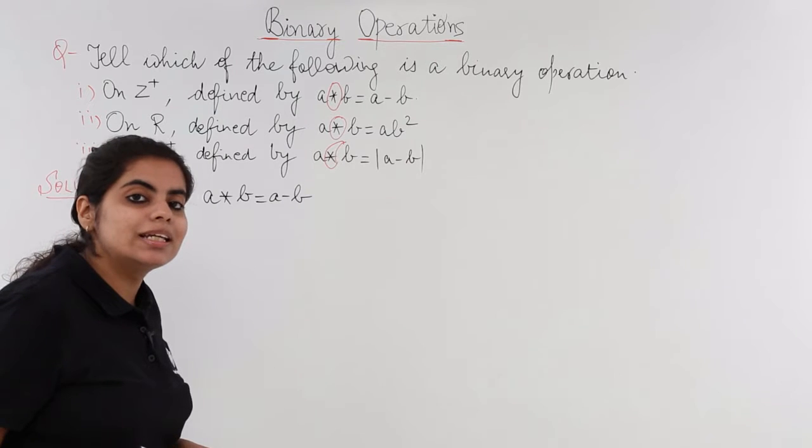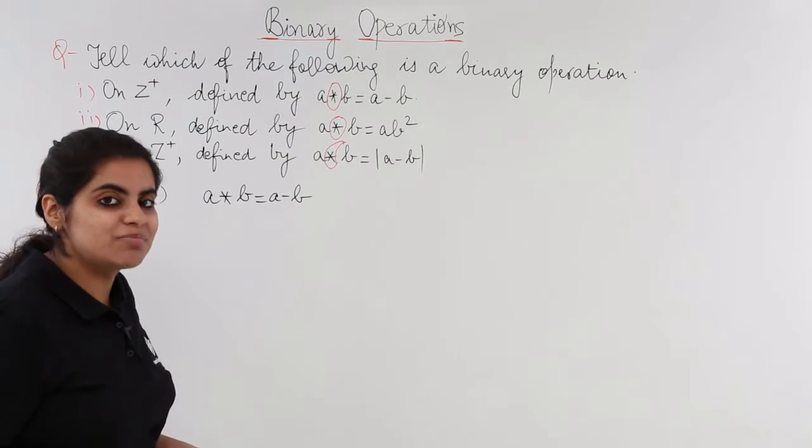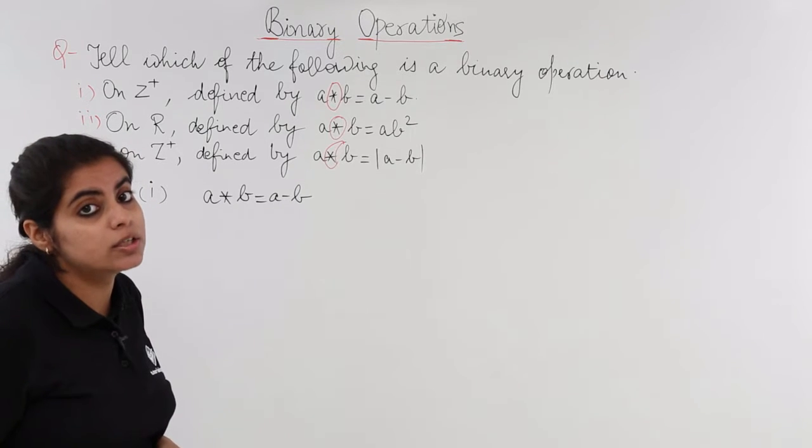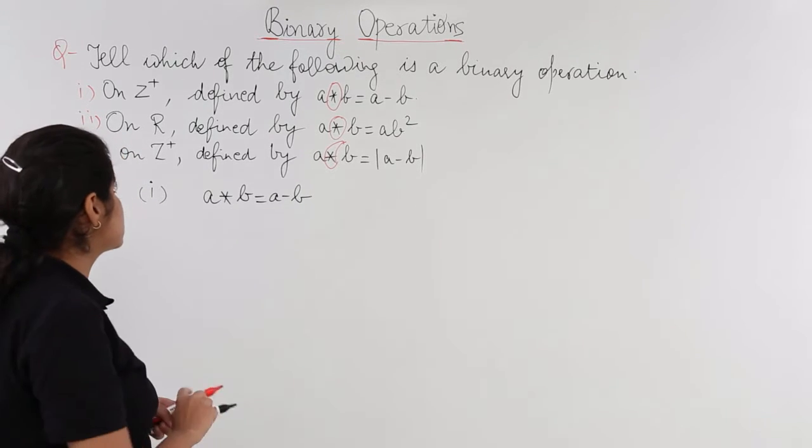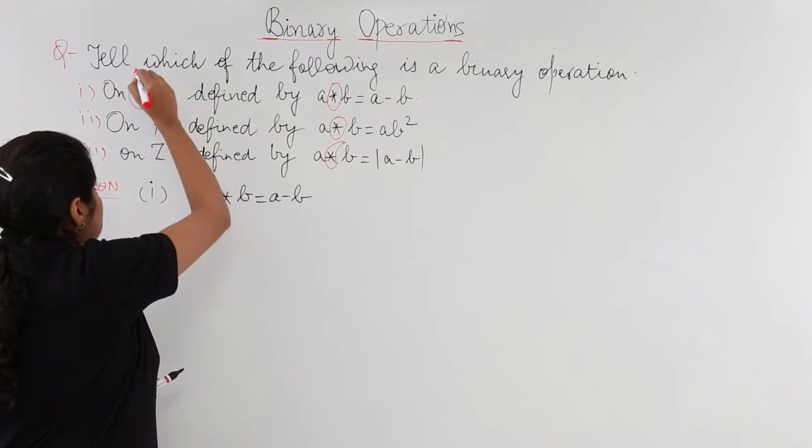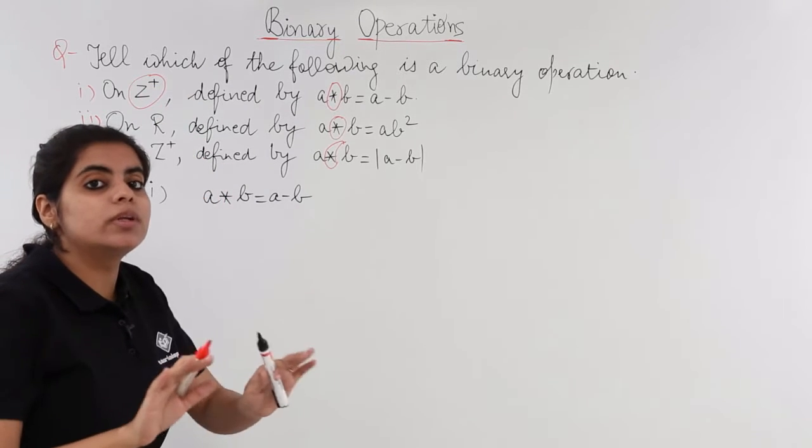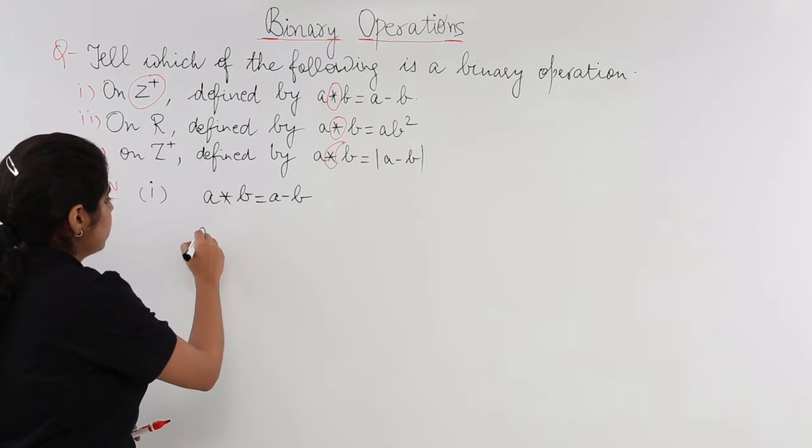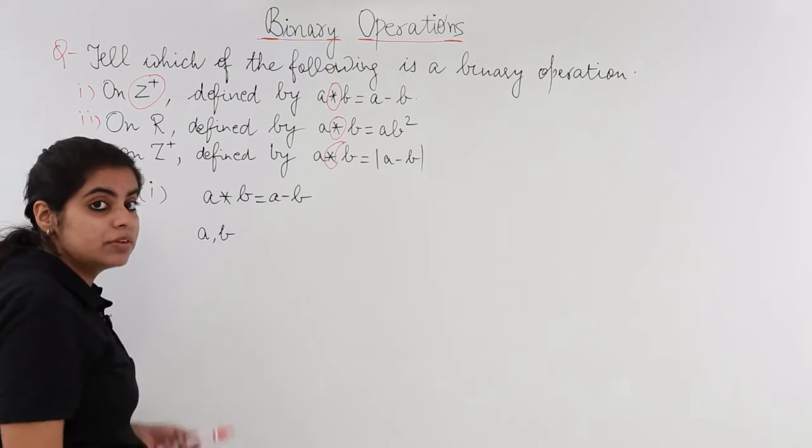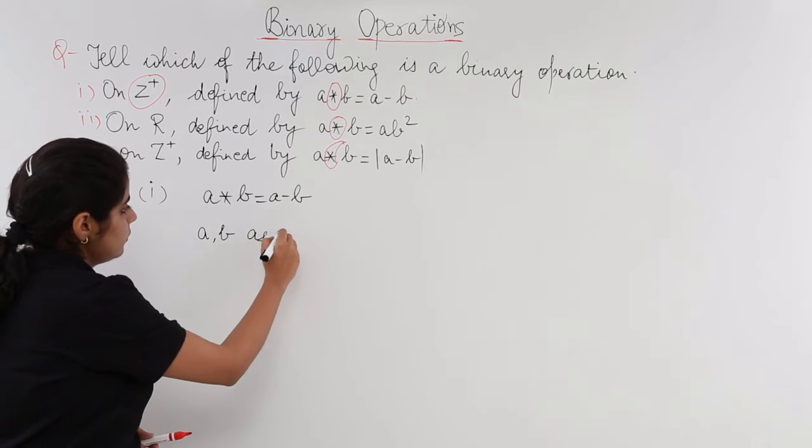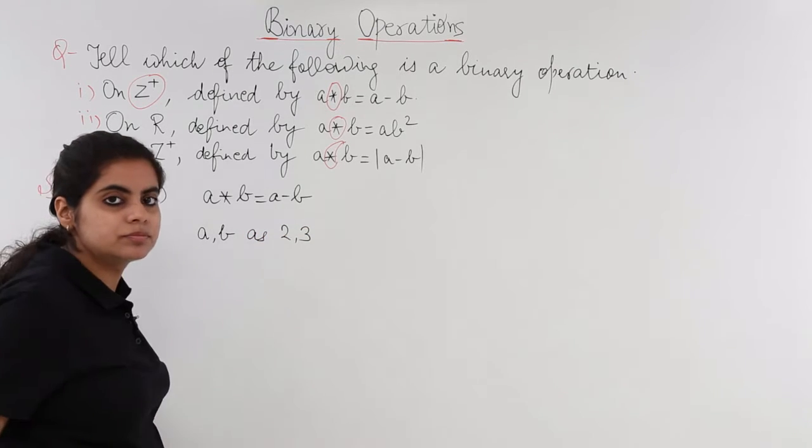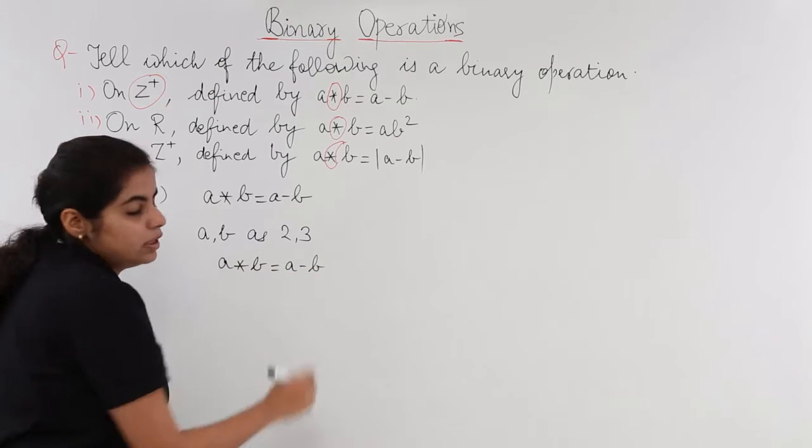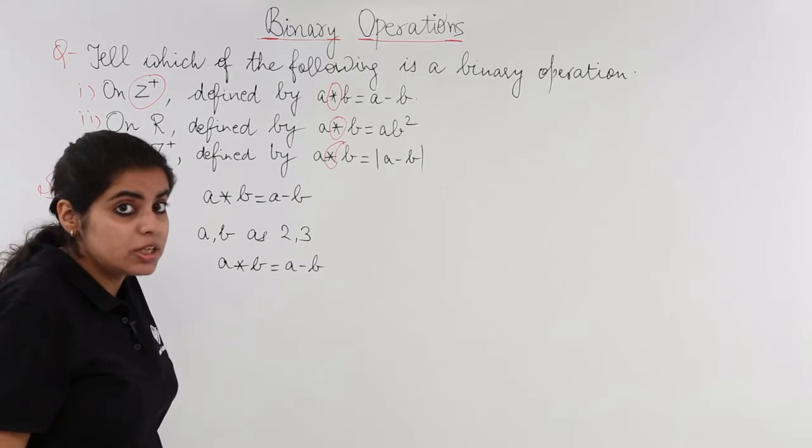A star B is equal to A minus B. Now what does this mean? The question asks me to check whether if this kind of operation is given, it is a binary operation or not. Now you have restricted things that Z should only be positive. But consider one example.